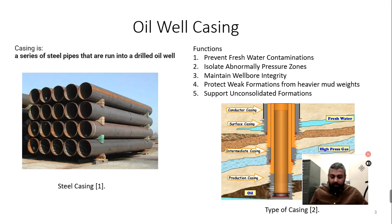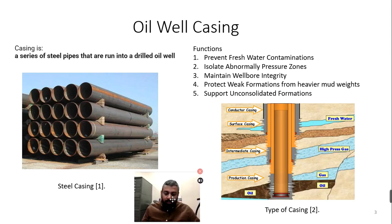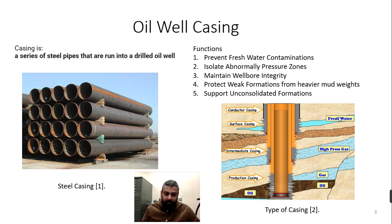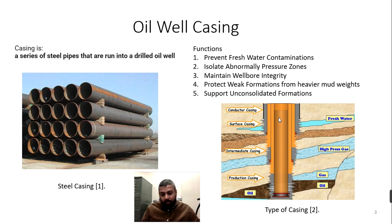Let's first look at what primary cementing is. In an oil well or gas well, as we dig deeper, there is a big chance the hole may collapse, or there may be a fresh water formation, or an abnormally pressured zone. For these reasons, the hole needs to be controlled in a certain way. We control it by putting a plumbing system using casing and then tubing.